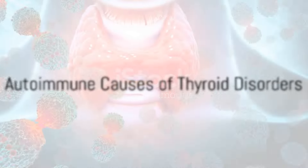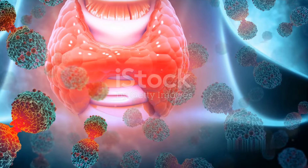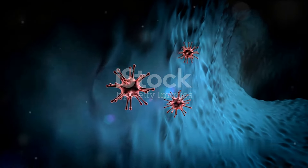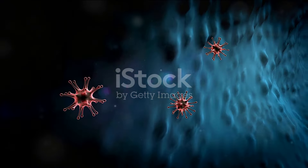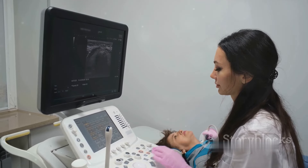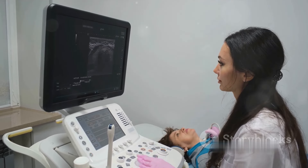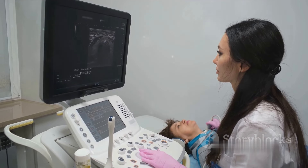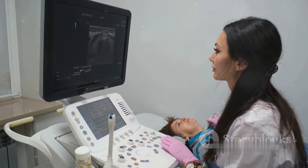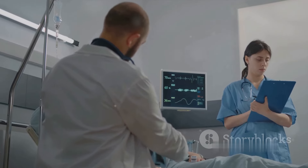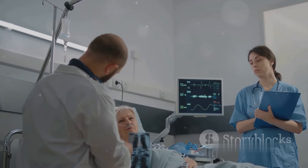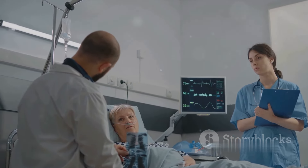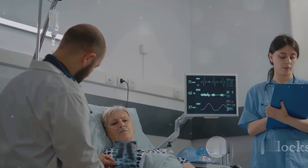One leading cause is autoimmune disease. This is when your body's immune system mistakes your thyroid cells for invaders and attacks them. Hashimoto's disease, for instance, is an autoimmune disorder that can cause hypothyroidism, or underactive thyroid. On the other hand, Graves' disease is an autoimmune disorder that can lead to hyperthyroidism, or overactive thyroid.